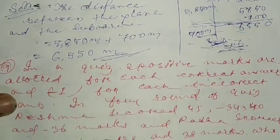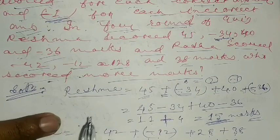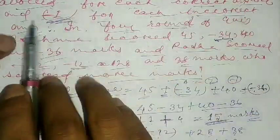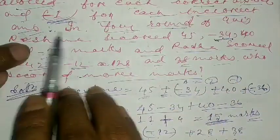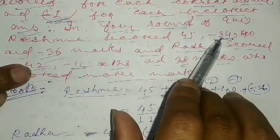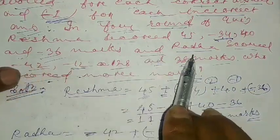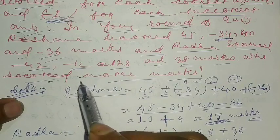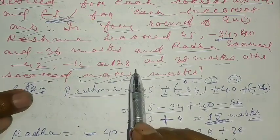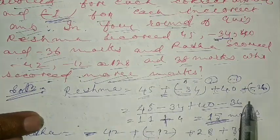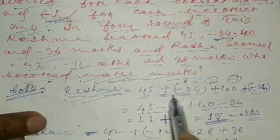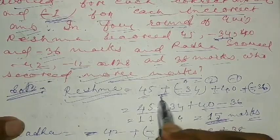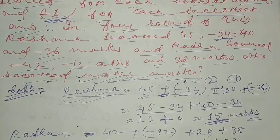Now we move to question number nine. In a quiz, two positive marks are allocated for each correct answer and minus one for each incorrect answer. In four rounds, Resma scored 45, minus 34, 40, and minus 36 marks. Radha scored minus 42, minus 12, 28, and 38 marks. Who scored more marks?